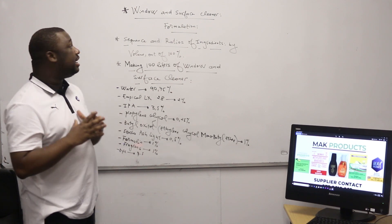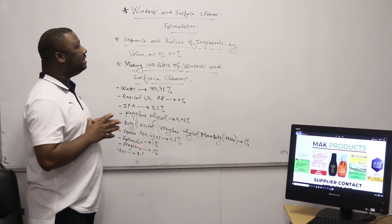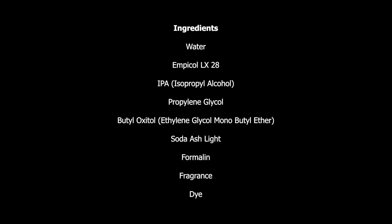Let's start by stating the ingredients you need to manufacture the window and surface cleaner. We have water, the MP called LX28, IPA which stands for isopropyl alcohol, propylene glycol, butyl oxytone (also called ethylene glycol mono butyl ether), soda ash/lye, formalin which is our preservative, fragrance of your choice, and dye of your choice.